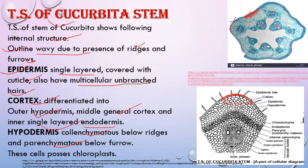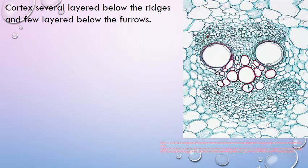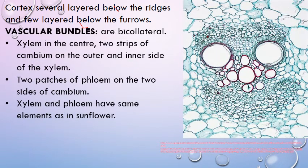The parenchymatous cells below the furrows also bear chloroplasts — so they are chlorenchyma. There are several layers of cortex below the ridges, but fewer layers below the furrows.